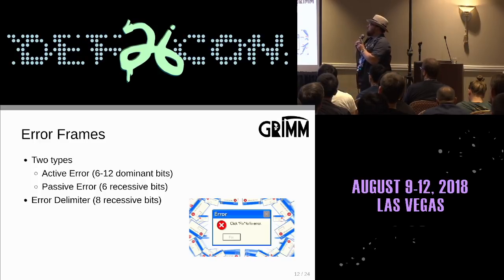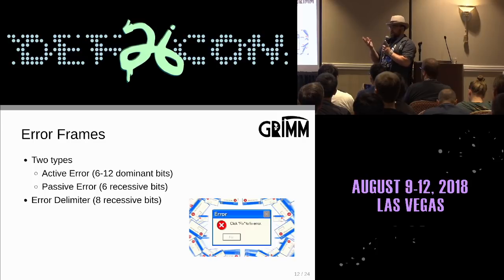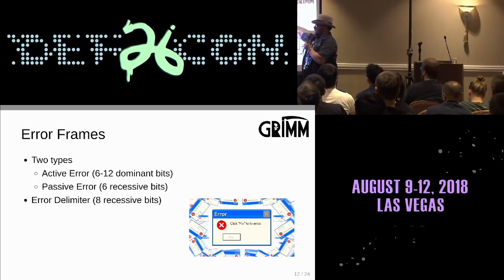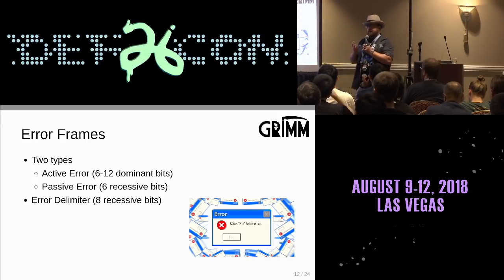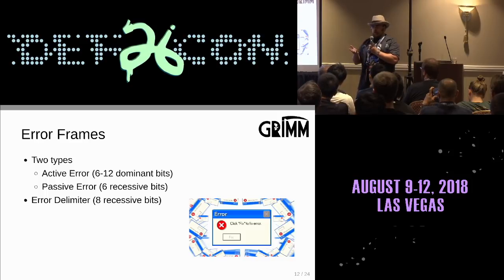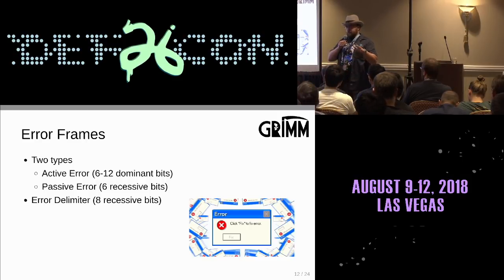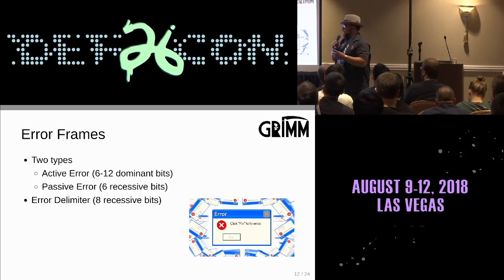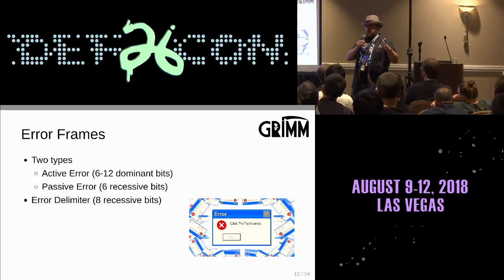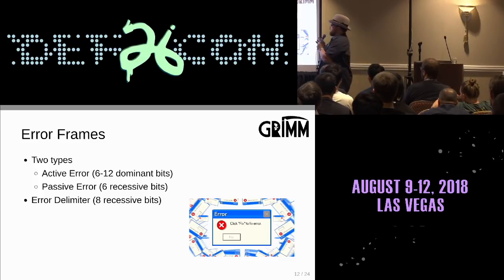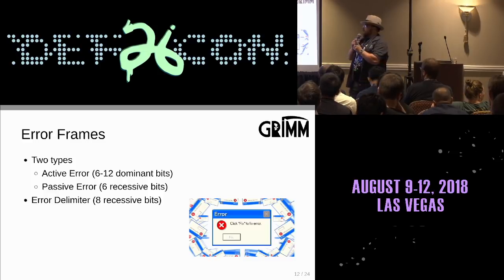There are two types of error frames. In the active error state — the default when your error counter is low — whenever the node detects an error it sends six dominant bits. But six dominant bits violates bit stuffing, so all other nodes on the bus also start sending error frames due to the stuff error. You end up with between six and twelve dominant bits on the bus. In the passive error state, you send six recessive bits instead, then eight more recessive bits to leave the bus idle.